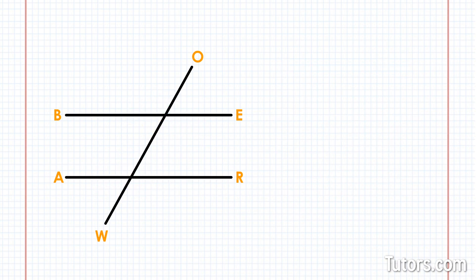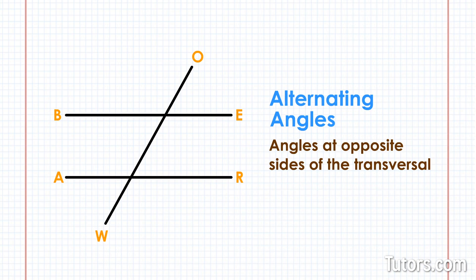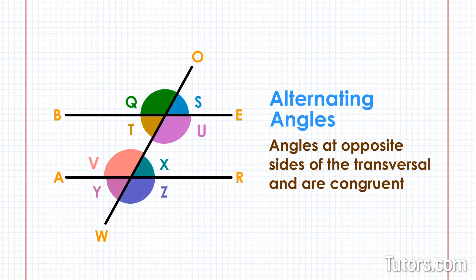Last but not least, let's look at the alternating angles. Alternating angles are pairs of angles in which both angles are either interior or exterior. They appear on opposite sides of the transversal and are congruent. The four pairs of alternating angles in our drawing are angle V and angle U, angle X and angle T, angle Q and angle Z, angle Y and angle S.